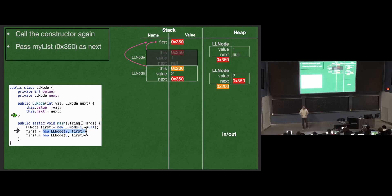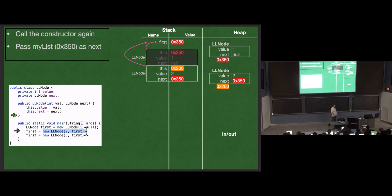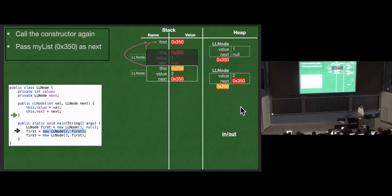Each one of these nodes can be anywhere in memory — it's whatever we get when we ask the operating system for space. We don't care where each element is; we just care that we have a reference so we can find it. We store that reference either in a 'next' variable if it's not the first element of the list, or directly in a variable on the stack if it is the first element. It's a lot of references to get this linked list working. So first is 480, then reference, reference — we hop around memory and get these values.